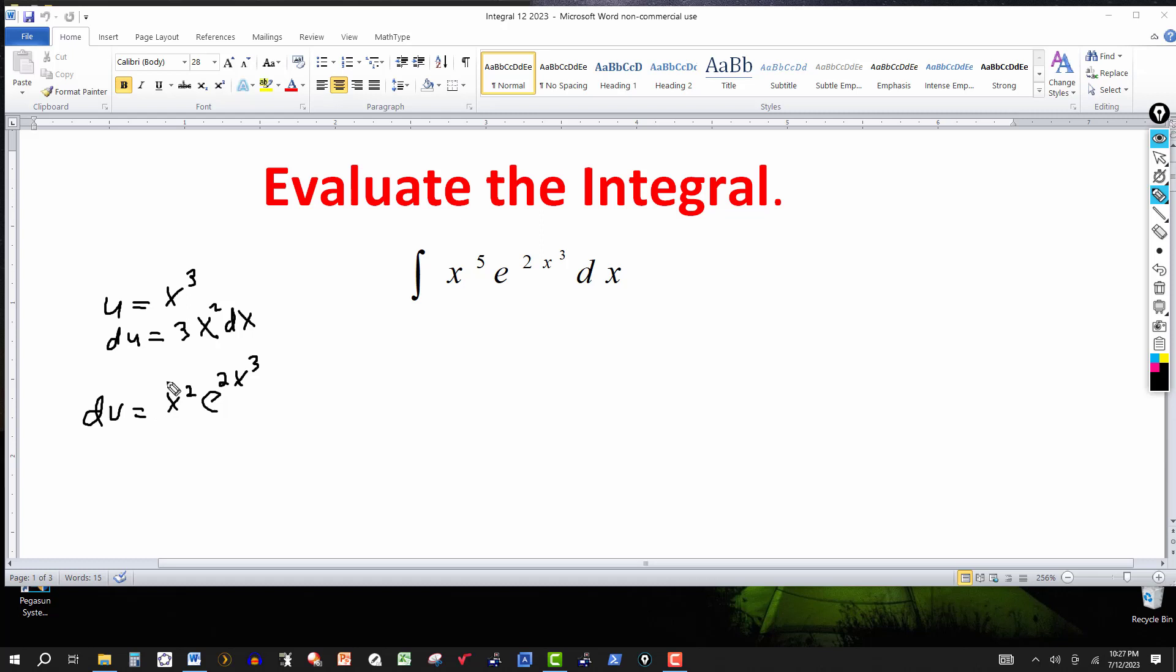And then dv, I want to integrate those sides here. Over here with respect to v, it will give me a v. And over here with respect to x. Notice the derivative of the exponent of the exponential, 2x to the third, is 6x squared. Which is convenient because I have an x squared right there.